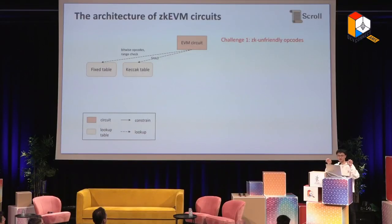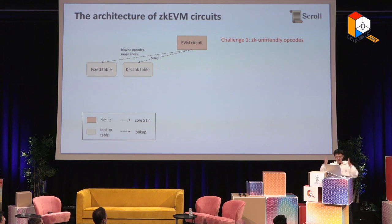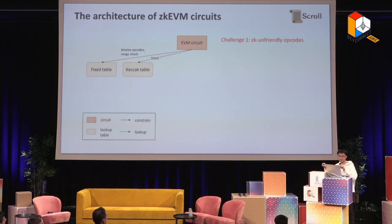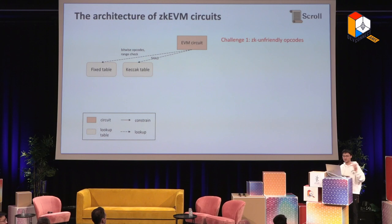Similarly, we can do the same thing for Keccak. In the EVM circuit, there needs to be some input of the Keccak hash function and some output. But it still needs some constraint to prove that it's a correct output for Keccak. We don't prove that in the EVM circuit — instead, we assume there is a table storing all the Keccak inputs and outputs. We just look up whether this entry belongs to that table. If it belongs, it means this input and output have the correct Keccak relationship. That's challenge one handled: we can look up a fixed table or Keccak table for ZK-unfriendly opcodes.